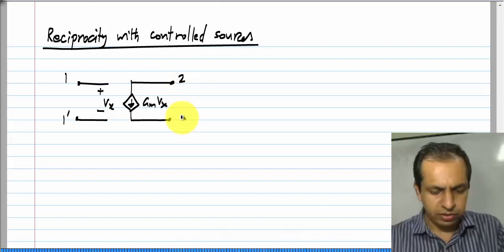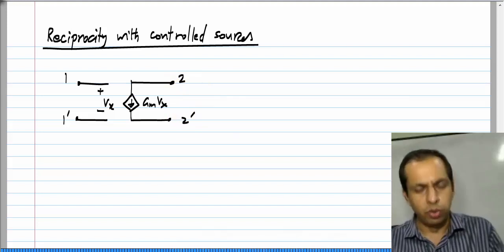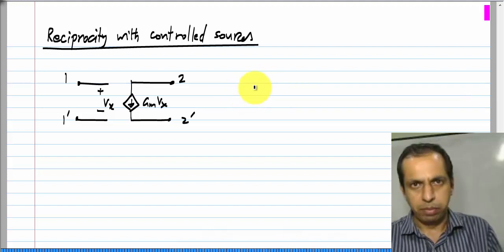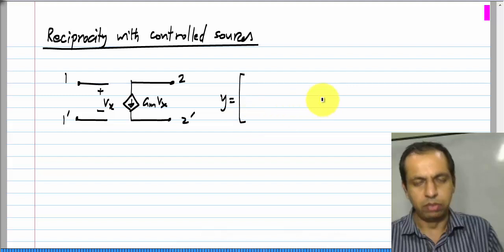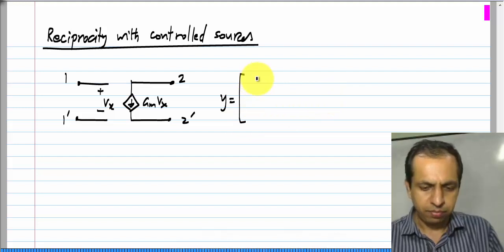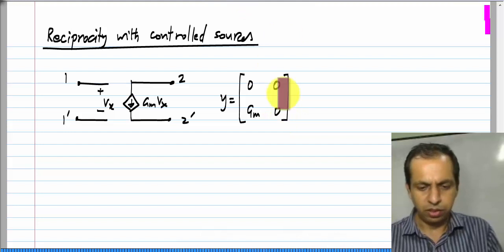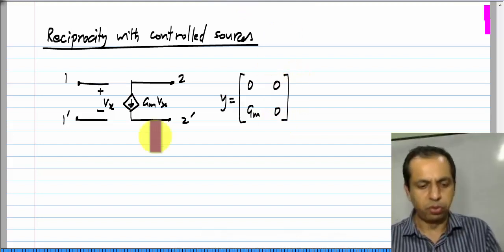If I define this to be my two-port, I know that first of all the correct parameter set for describing this is the Y set, and the Y parameters are these. Clearly, it is non-reciprocal.